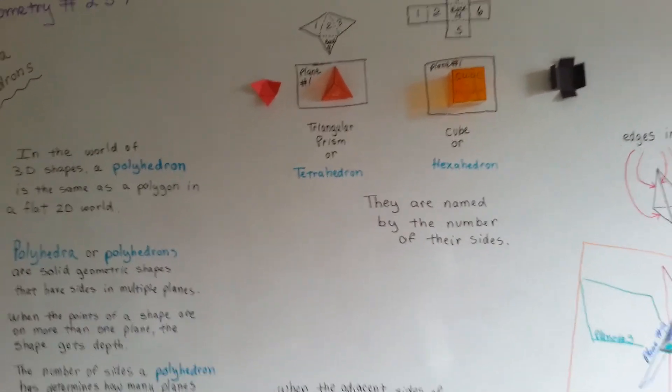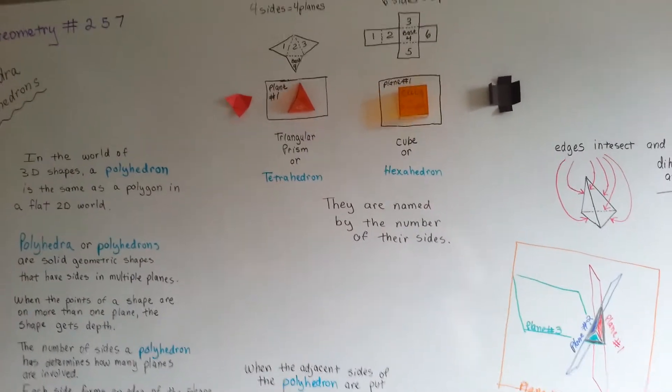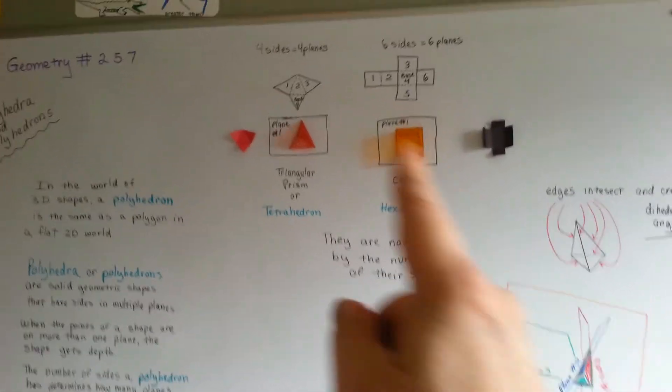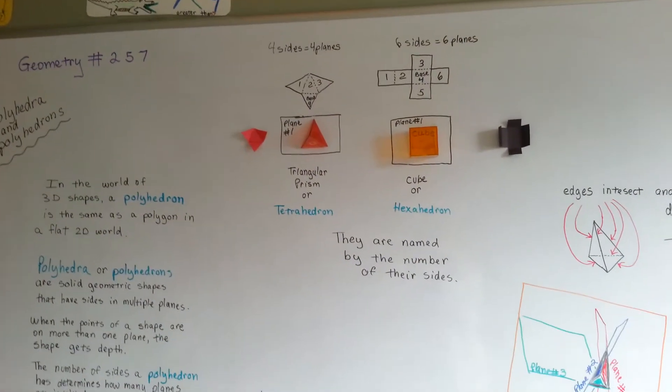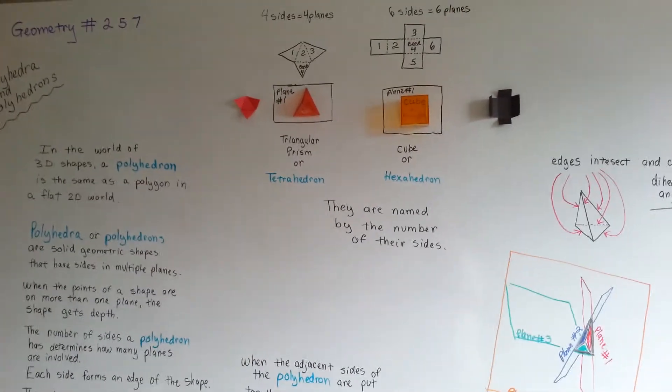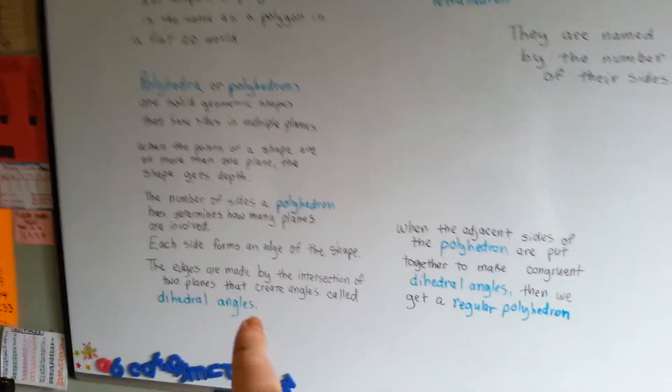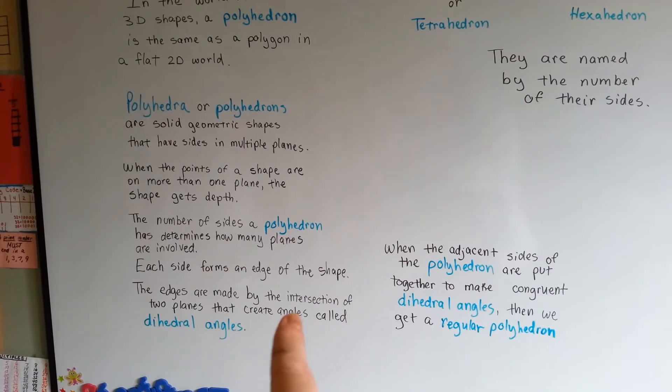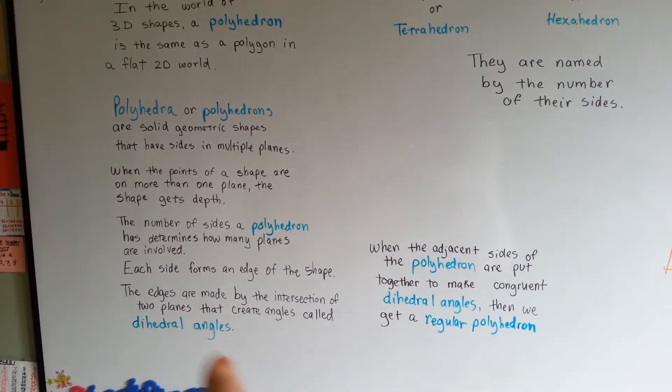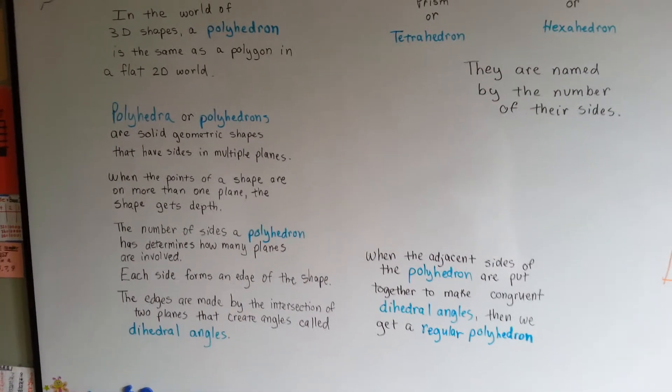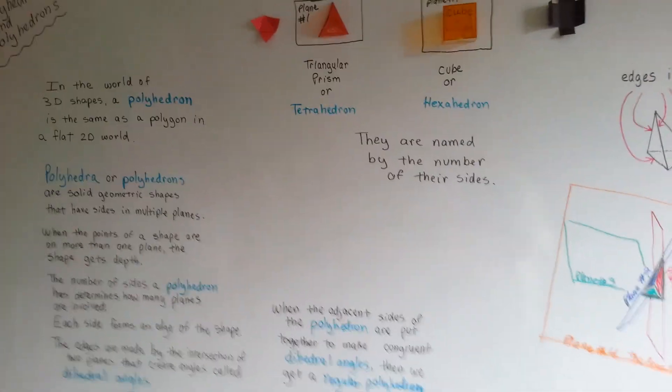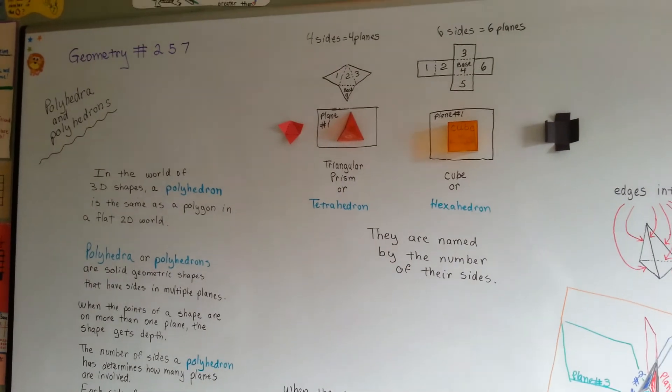So, that is polyhedra and polyhedrons. I hope I wasn't too confusing, and I hope opening it up explained it. But just remember, they're named by how many sides they have, and remember what the dihedral angles are. They are the edges made by the intersection of the two planes, and they create these dihedral angles. So, I'll see you next video. Bye!